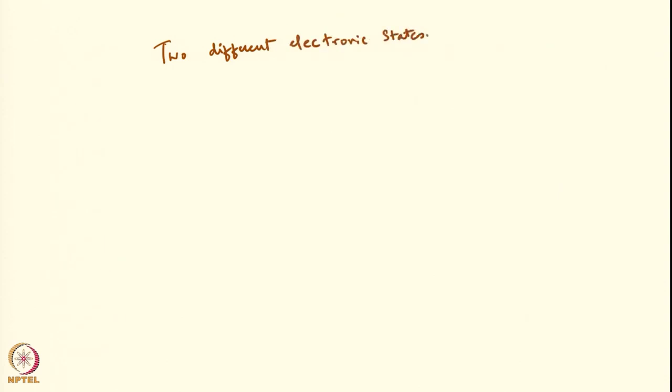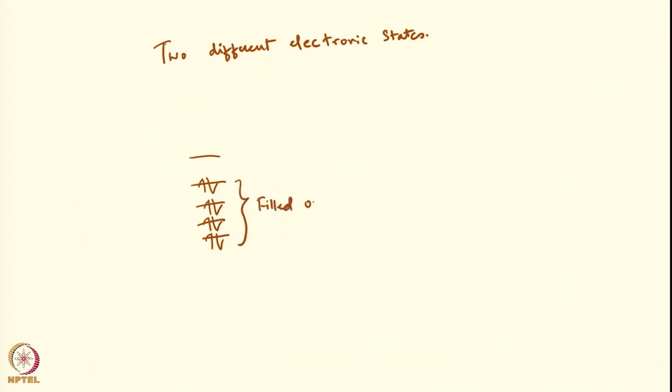Electronic transitions happen between two different electronic states. What does 'two different electronic states' mean? For example, you have a molecule and one can define an electronic configuration — even for atoms, you can define an electronic configuration. Let us suppose there are filled orbitals, using Pauli's exclusion principle or Aufbau principle, and there are unfilled orbitals. Then, by applying energy or putting in a photon,